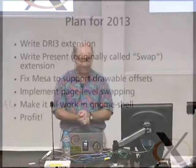Here was the plan for 2013: I was going to have these perfectly executed little extensions all in a string, about one per month. They were all going to work beautifully together. I was going to write a DRI 3 extension, a new extension called Present — originally called Swap — hack Mesa to support drawable offsets again, implement the page-level swapping I talked about last year, and make it all work in GNOME Shell. It was going to be awesome.